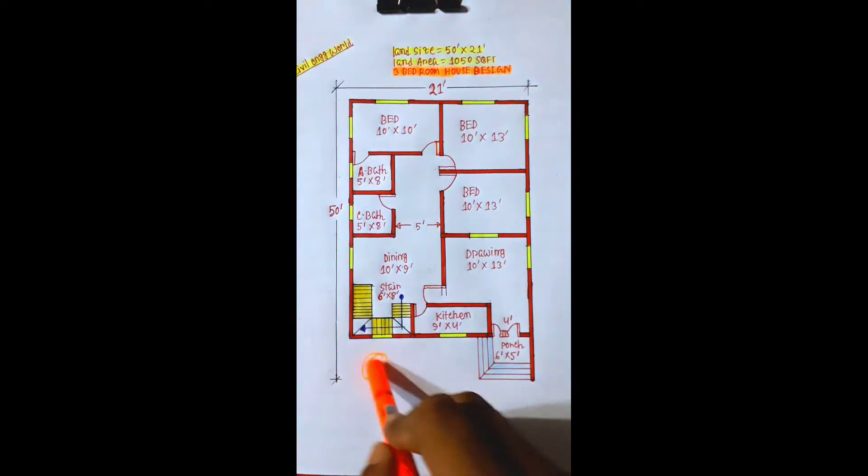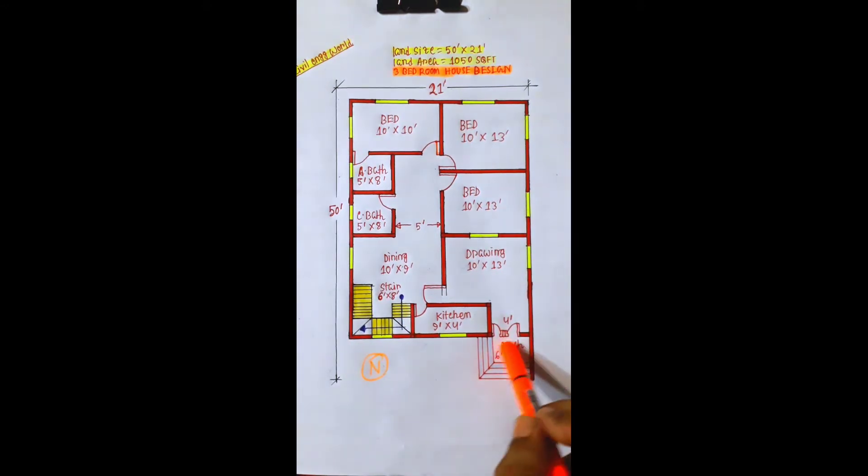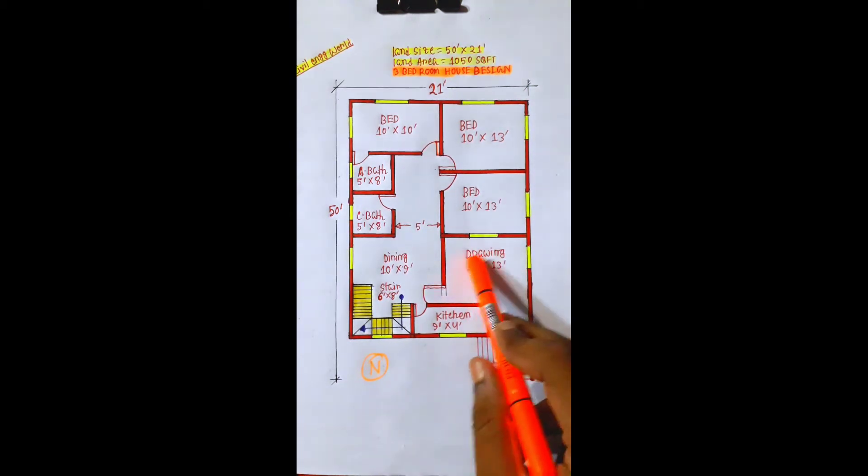The building is 25 feet, north facing. There's a tree. The porch is 10 feet by 5 feet. This is the main gate, 4 feet. The drawing space is 10 feet by 13 feet.